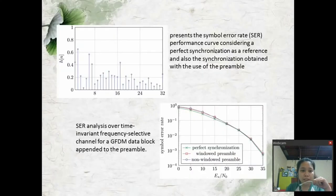The first figure is the channel impulse response used for the SER analysis. It presents the symbol error rate or SER performance curve considering perfect synchronization as a reference and also the synchronization obtained with the use of the preamble. The next graph is the SER analysis over time invariant frequency selective channel for a GFDM data block appended to the preamble.